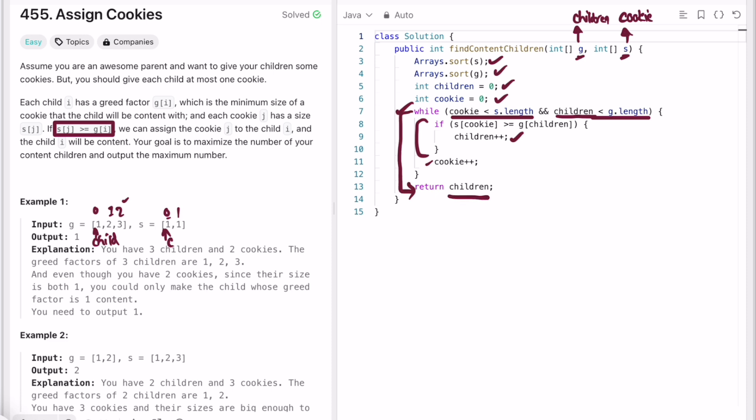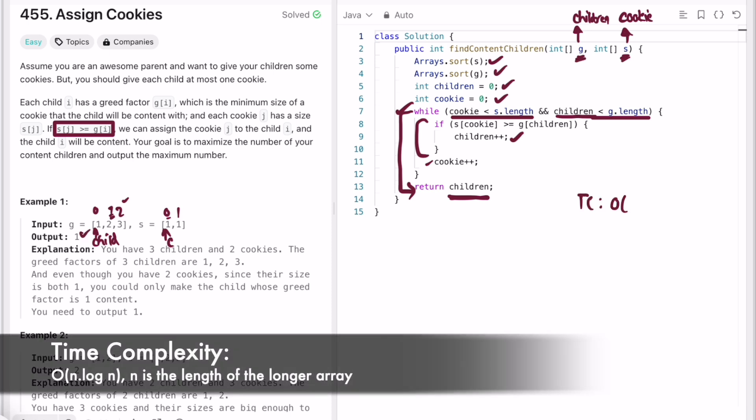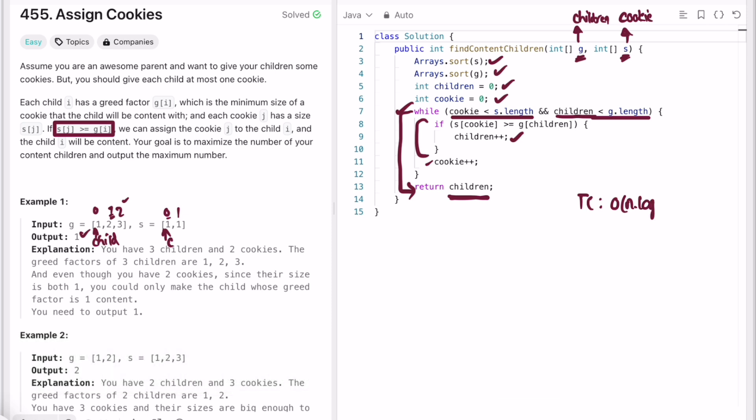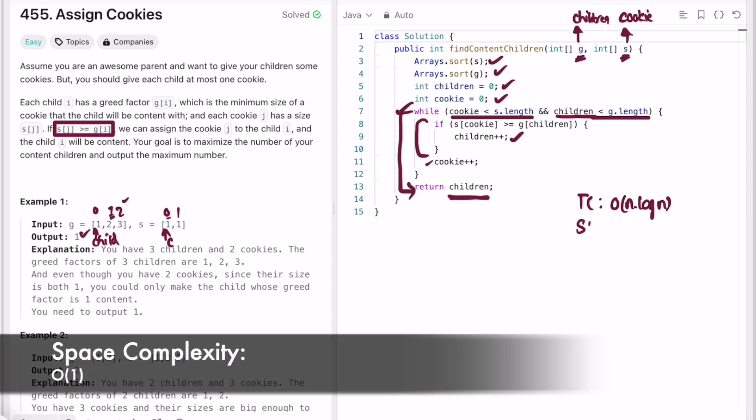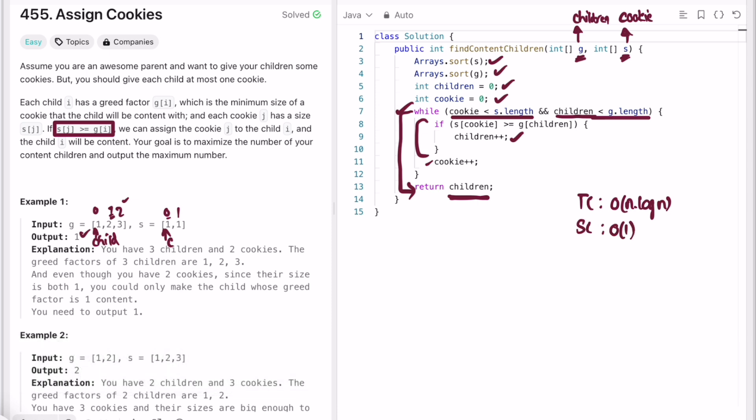Finally, outside the for loop, we return whatever is present inside the children pointer. Wherever the child pointer is pointing to, that will be the output. In this case, it will point to index one, so one is the output. Time complexity of this approach is O(n log n) because we are sorting the array in ascending order, where n is the length of the longer array. The space complexity is O(1) because we are not using any extra space to solve this question.